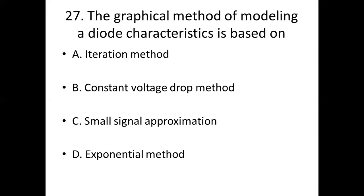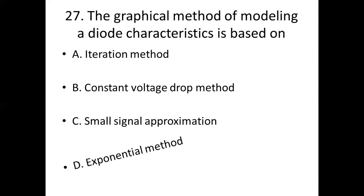27th bit. The graphical method of modeling a diode characteristic is based on: Option A: iteration method. Option B: constant voltage drop method. Option C: small signal approximate. Option D: exponential method. Answer: Option D, exponential method.